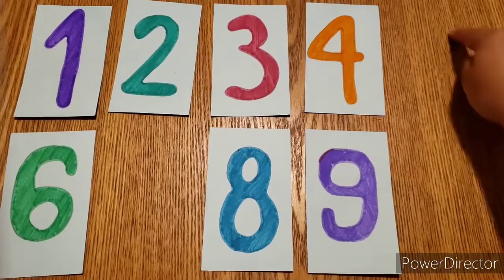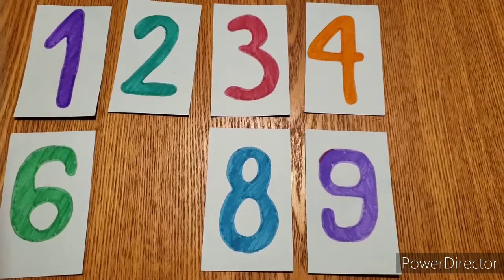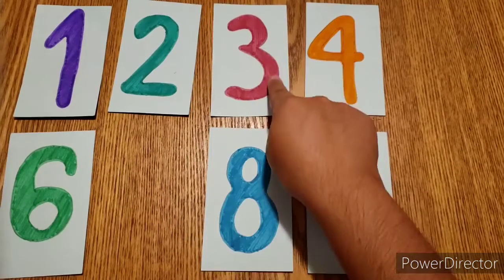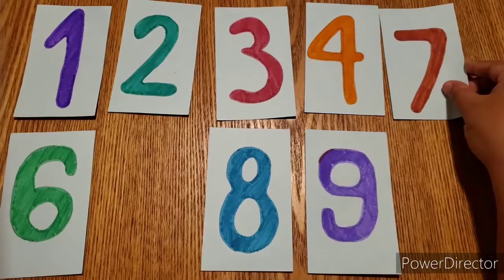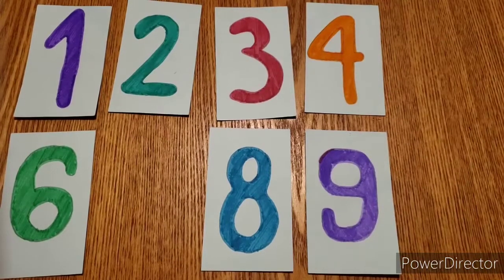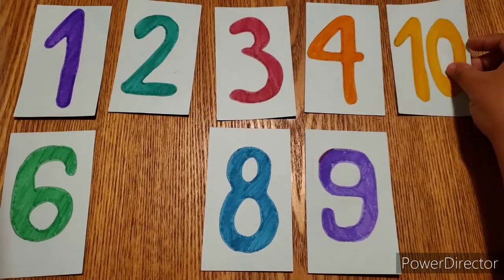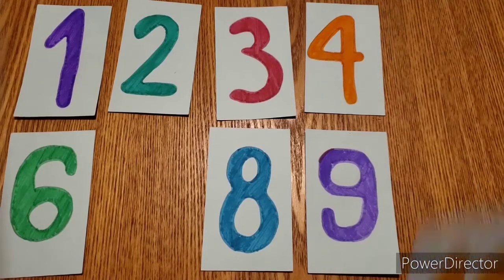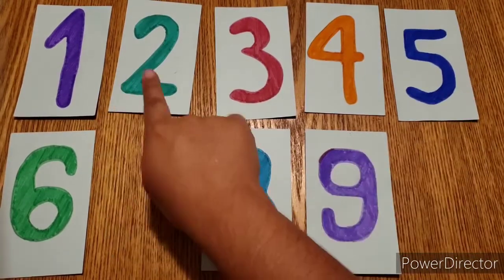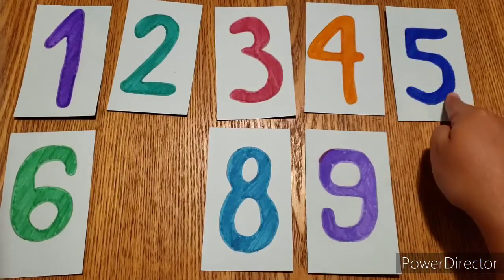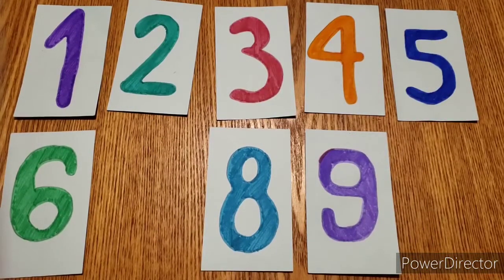Now we need to find this missing number. So we have one, two, three, four, blank. Is it the number seven? No. Number ten? No. Number five? Let's see. One, two, three, four, five. Yes, it is the number five.